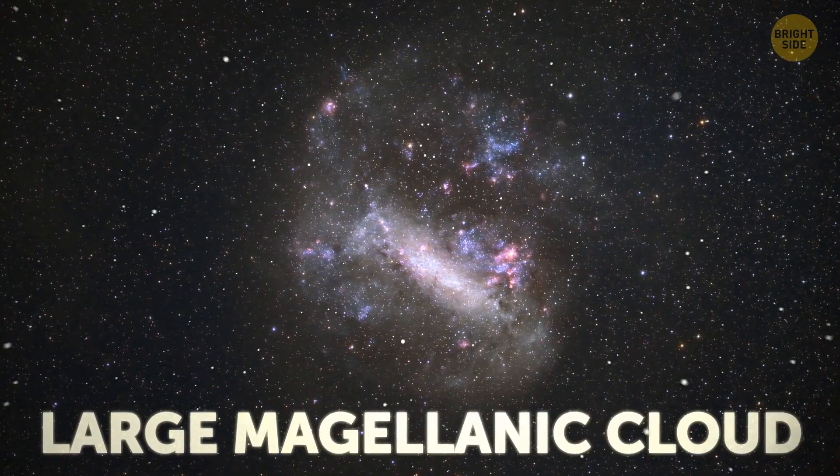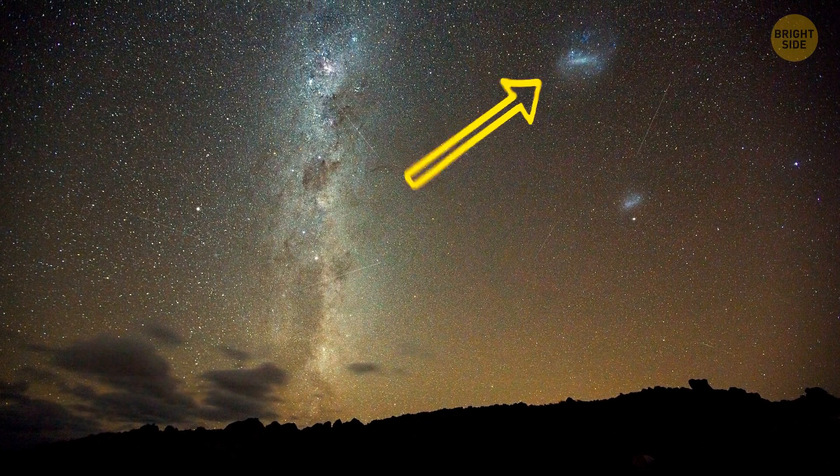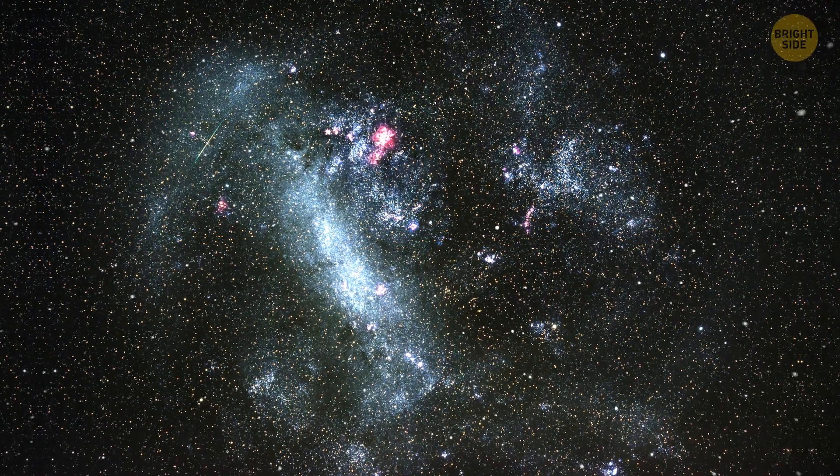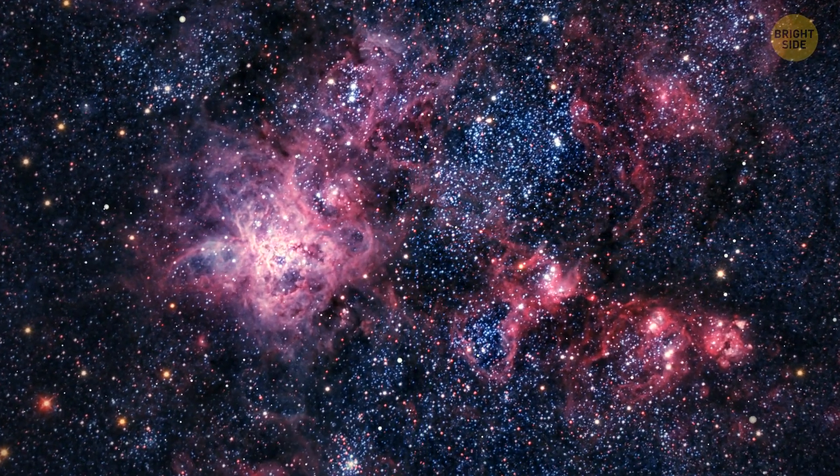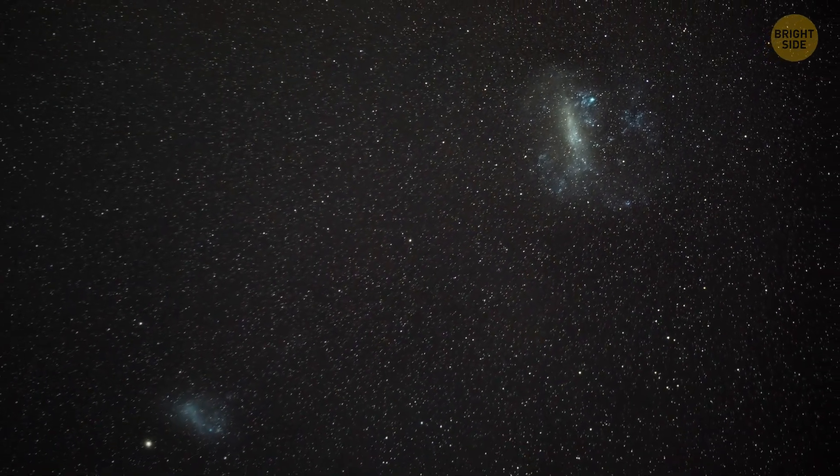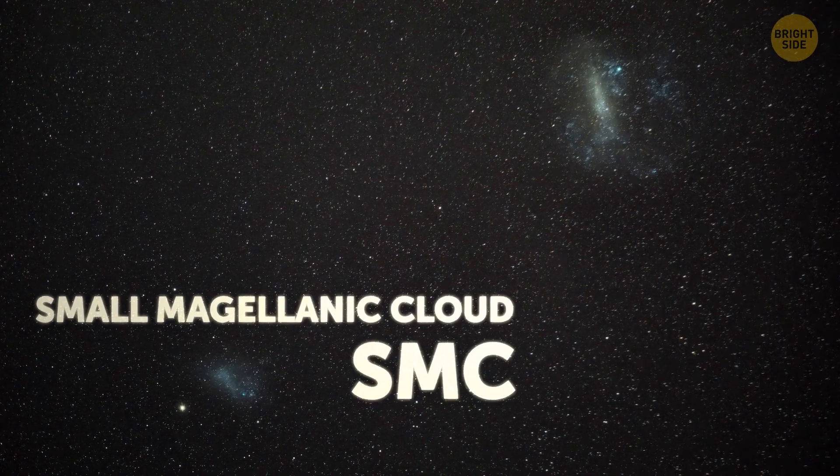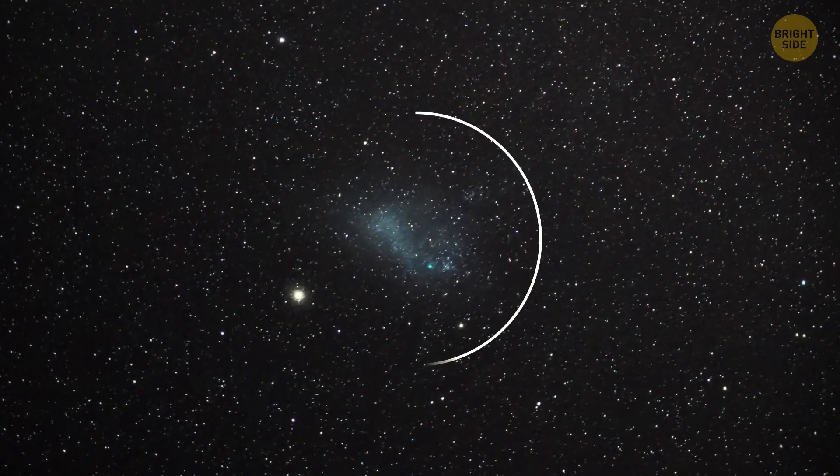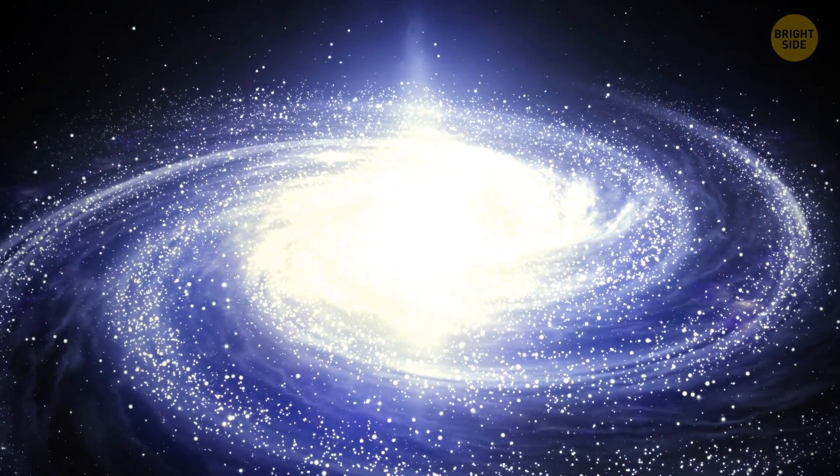The Large Magellanic Cloud, LMC to astronomers, is an irregular dwarf satellite galaxy of the Milky Way, containing about 30 billion stars, with a dynamic star-forming region called the Tarantula Nebula, which we will be cruising through shortly. Of course, if there is a large Magellanic Cloud, there must be a small Magellanic Cloud, SMC. And there it is, below and to the left of the LMC. The Milky Way will eventually ingest both dwarf galaxies. Some prefer the word accreted, but the result is the same.